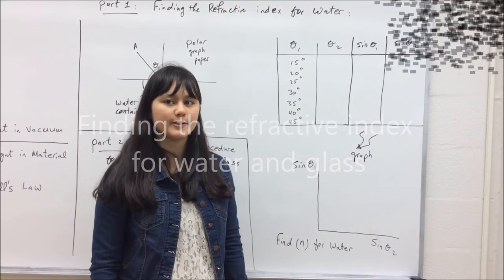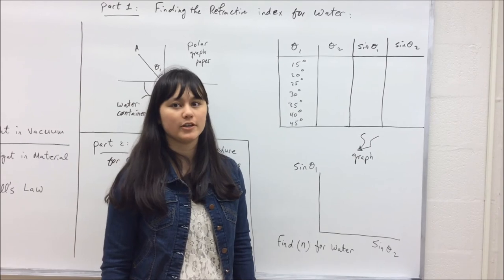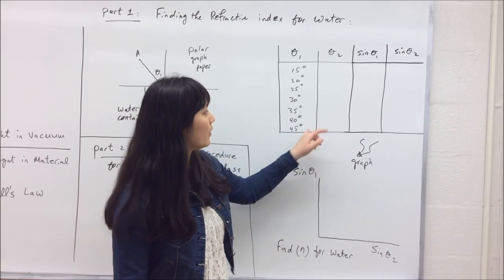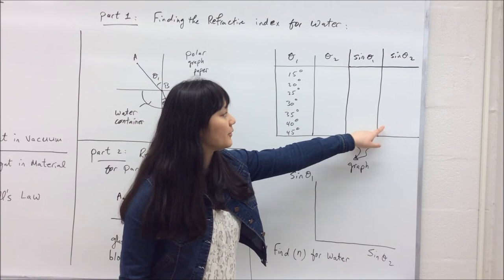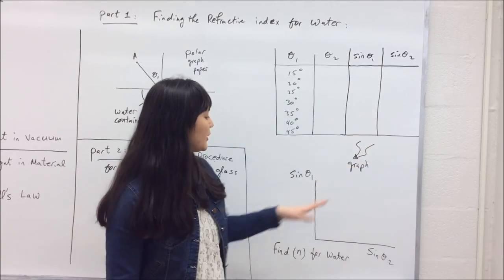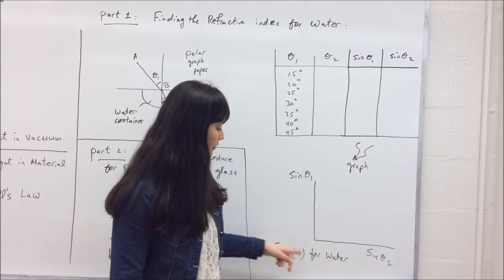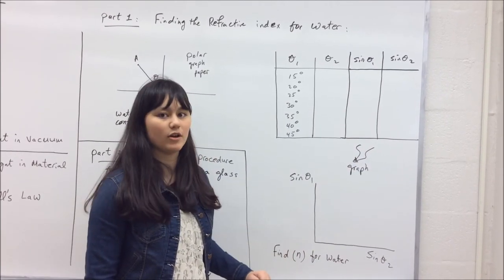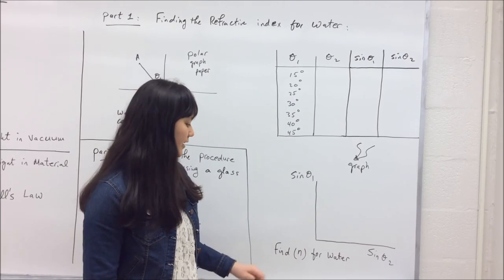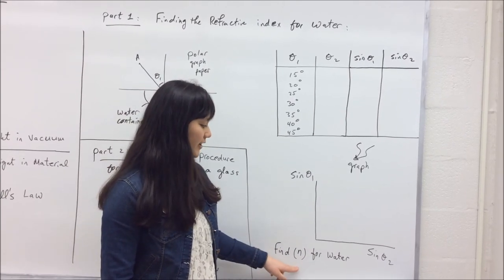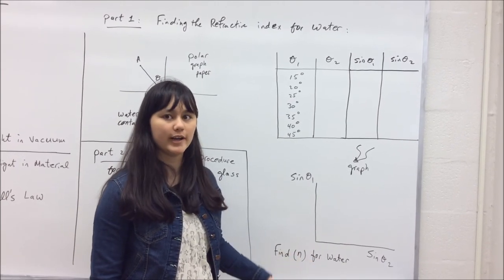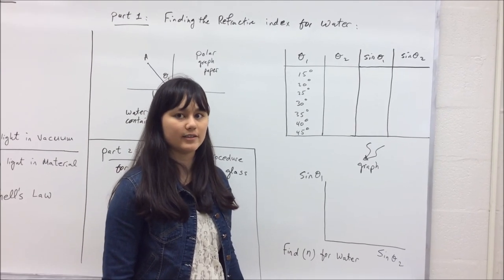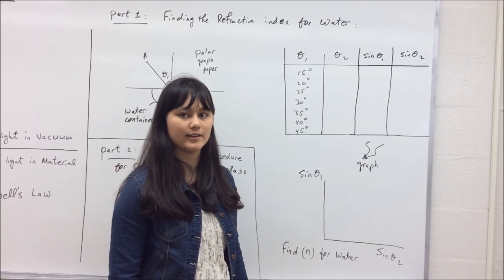After you've filled up your data table, use the information to find sin θ1 and sin θ2, and construct a graph. Using Snell's law, you'll be able to find the refractive index for water from part 1, and the refractive index of glass from part 2.